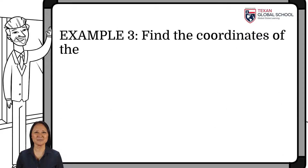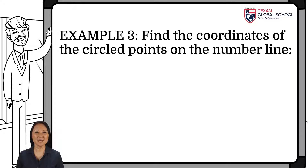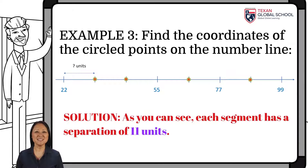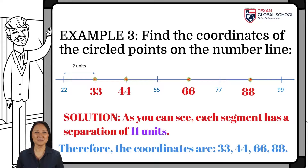Let's look at one last example. Given the following number line, we will find the coordinates of the indicated points. As you can see, each segment has a separation of 11 units. We start at 22, so the next coordinate will be 33, then 44, which coincides with a marked point, then 55. The next ones are 66, then 77 coincides, and 88 continues. We then end with 99 indicated. Therefore, the coordinates are 33, 44, 66, and 88.